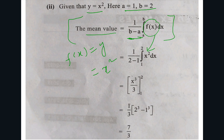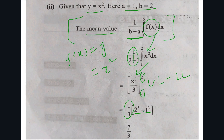So 2 minus 1 becomes 1. The integral of x² is x³/3. After integration, substitute upper limit minus lower limit: in place of x substitute 2 (upper limit) minus 1 (lower limit). That gives 2³ minus 1³, with 1/3 factored out. 2³ is 8, 1³ is 1, so 8 minus 1 is 7. Therefore 7 times 1/3 gives 7/3 as the answer.